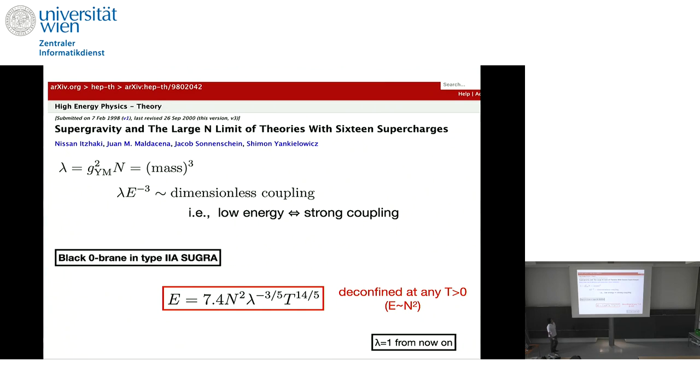And the dual is black zero-brane in type two supergravity. And the metric is given in terms of this 't Hooft coupling lambda and n over SU(N). And we just use that dictionary and use the Bekenstein-Hawking formula. And then we can show that the energy, in this case, should be 7.4. It's 7.41 something, you know, it's a particular number. Times n to the n square. Times a very strange power of lambda times a very strange power of the temperature.